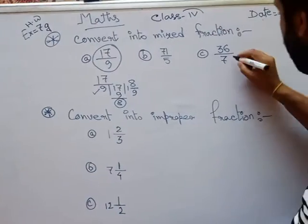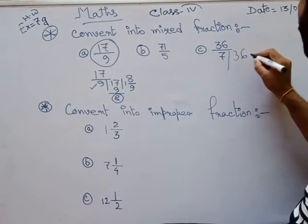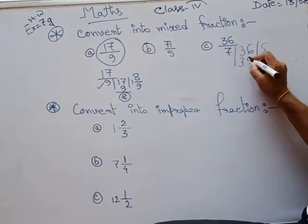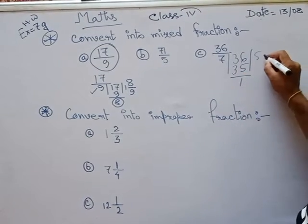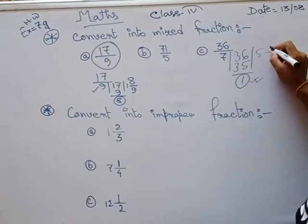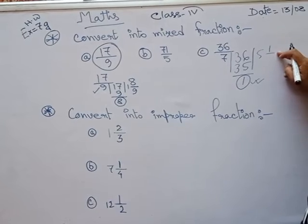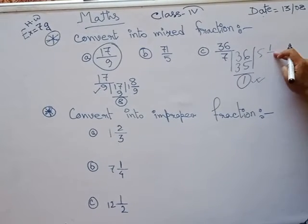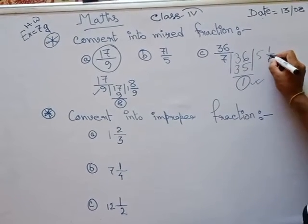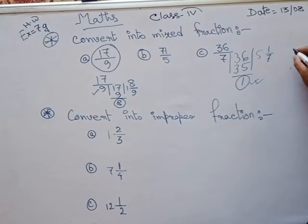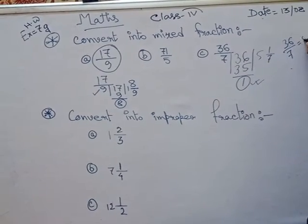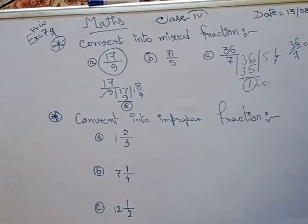Similarly, here is 36 — 7 fives are 35, that means 1 is left. So 1 will go as the remainder, 1 will go as the numerator, or the upper portion of the fraction. And 7 will go as the lower portion of the fraction. And 5 will go as the whole number. That means 36 by 7 equals 5 and 1 seventh.